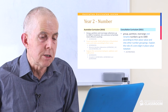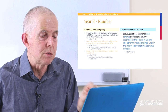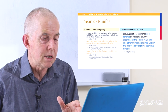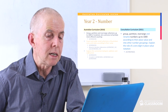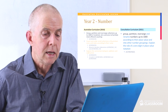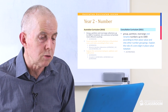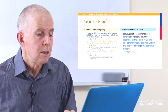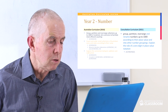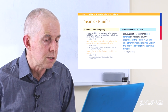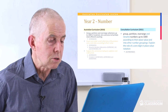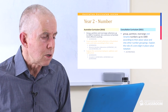The second number content descriptor: group, partition, rearrange and rename numbers up to 1000. Most of that comes straight from the old curriculum. The blue text shows it has been expanded to mention place value specifically, which is very useful, and it explains the role of a zero digit in place value notation. The document states two old content descriptors have been subsumed here, but neither actually appears in the new descriptor, so I think that's a documentation mistake.